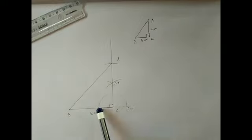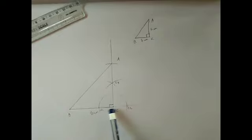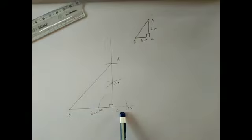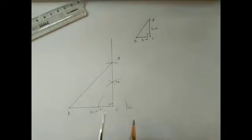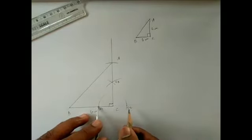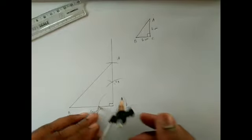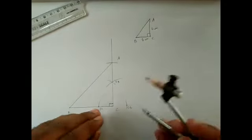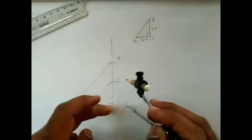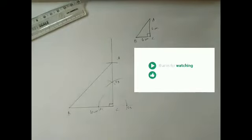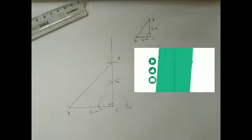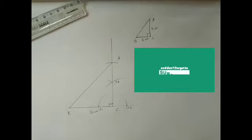So this is how we construct 90 degrees without a protractor. First draw two arcs from the vertex where we need 90 degrees, one on either side. Then measure the two arc points with the compass, draw two arcs above the vertex, and join the intersection point to the vertex — that gives us 90 degrees. Thank you.